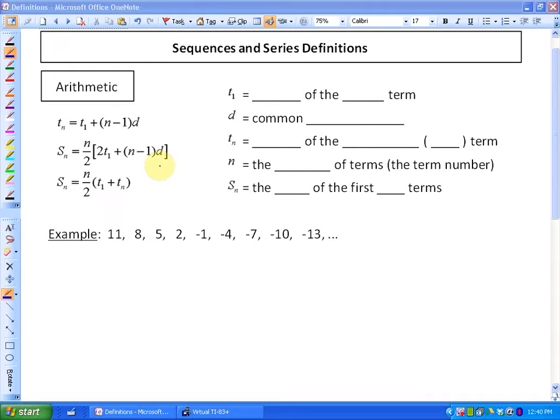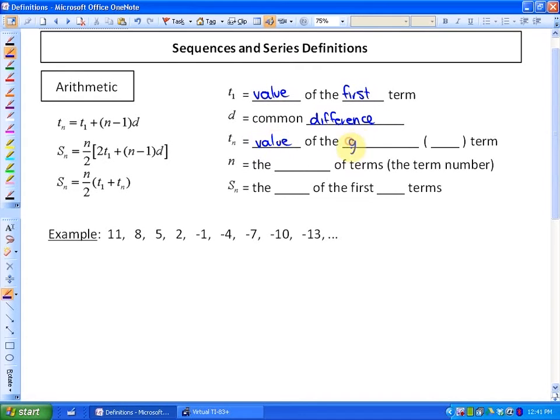So here's the definitions of things that have come up with arithmetic sequences and series. First of all, when you see T1, what that means is the actual value of the first term. When you see D, what that is is just the common difference. So what is it going up by or down by? Tn is the value of the general term, or in other words, the nth term. n is the number of terms, and finally Sn is the sum of the first n terms.